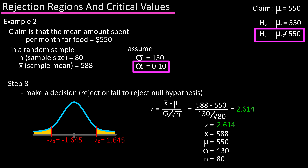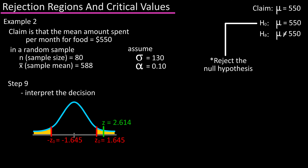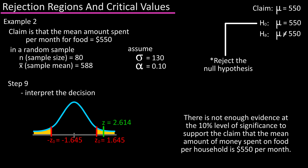Step eight: make a decision. On our graph, the standardized test statistic does fall in the rejection region to the right, as z is greater than positive z-naught, the critical value. So we would reject the null hypothesis. Step nine: interpret the decision. There is not enough evidence at the 10% level of significance to support the claim that the mean amount of money spent on food per household is $550 per month.